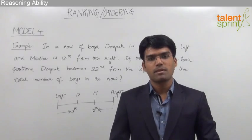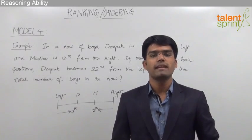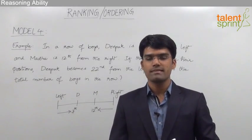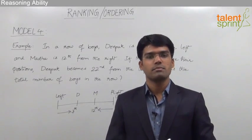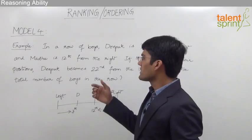Let us now take another example from ranking where we are supposed to find out the total number of persons in the given row when two persons have interchanged their positions. Let us look at this question.